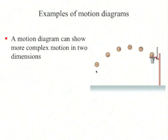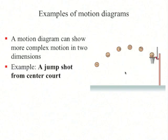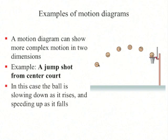A motion diagram can also show more complex motion. Here is a basketball being tossed up in the air going through a parabolic arc until it reaches the hoop. You can see that as the ball travels upwards it's slowing down, since the images are getting closer together, and as it goes downwards it's speeding up again.